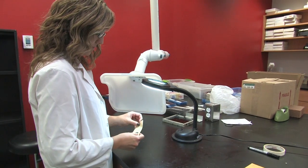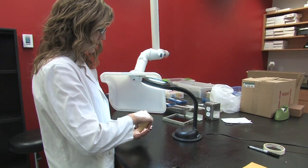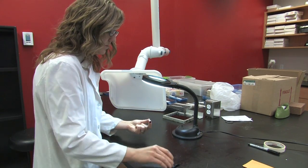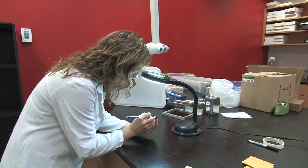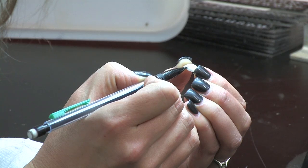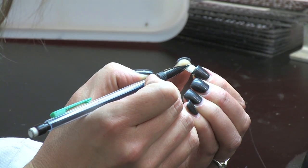Remove the otoliths from their envelopes and mark the cores. In this example we're embedding cod, so we look for a small bump on the sulcus side near the center of the otolith. The sulcus side is on the convex side of the otolith with the groove. Use a pencil not a pen to mark the core.